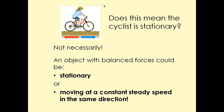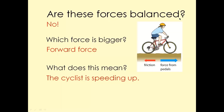Are these forces balanced? No — because even though the arrows point in opposite directions, the sizes of the arrows are different. The bigger force is from the pedals and friction is the smaller force. This means the cyclist is speeding up because the force from the pedals is bigger than the force of friction. The resultant force is forwards, so the cyclist moves forward and speeds up.